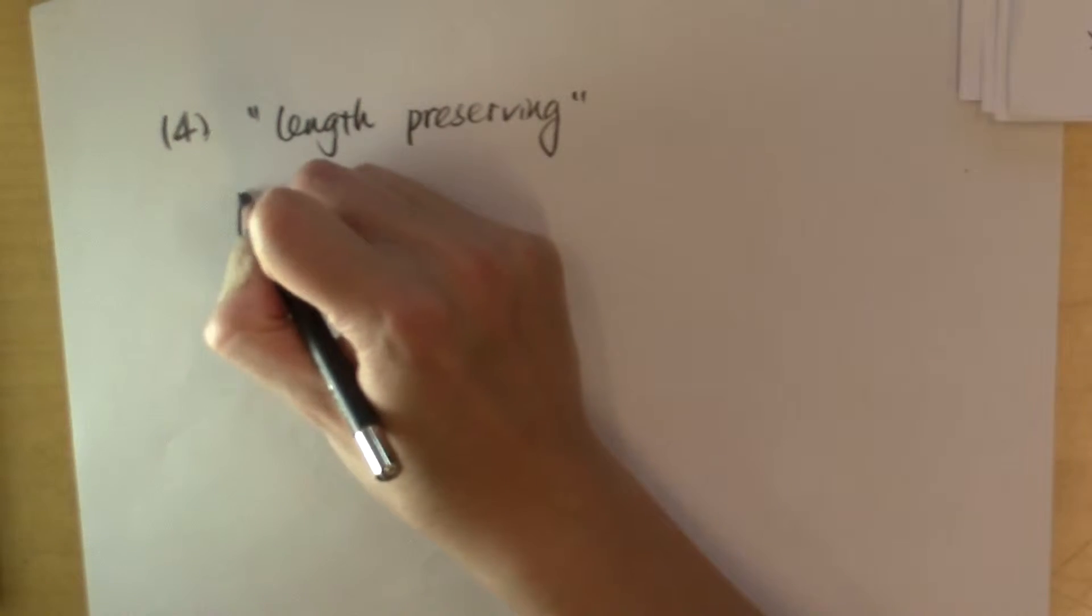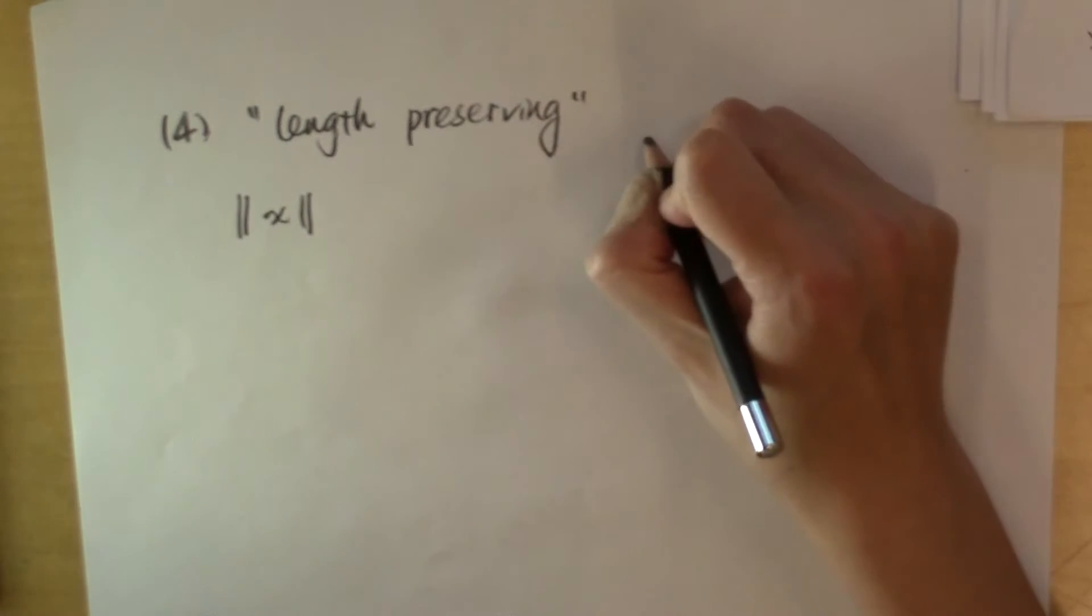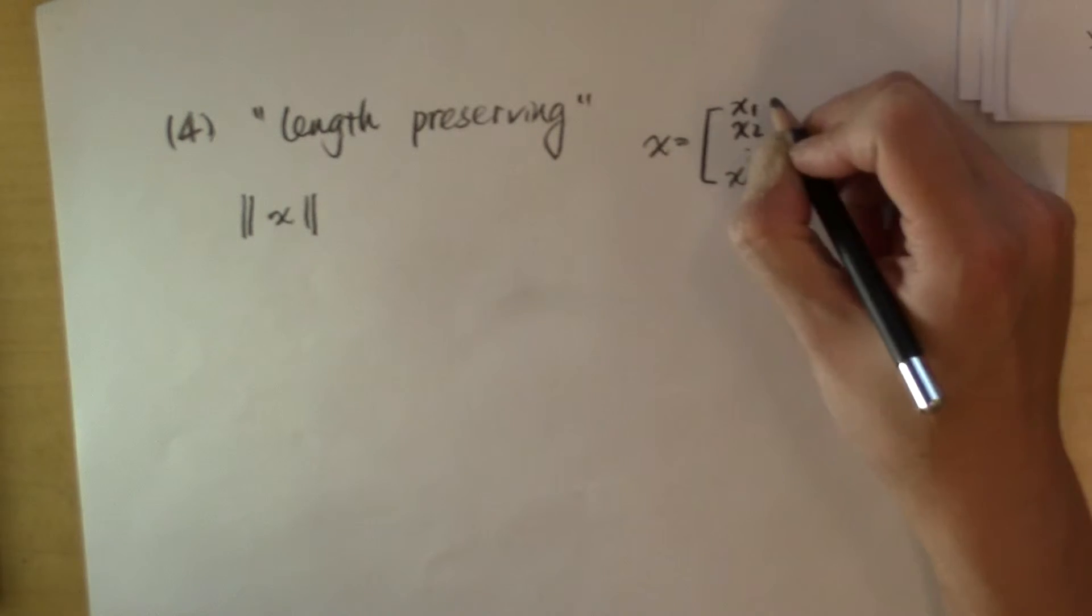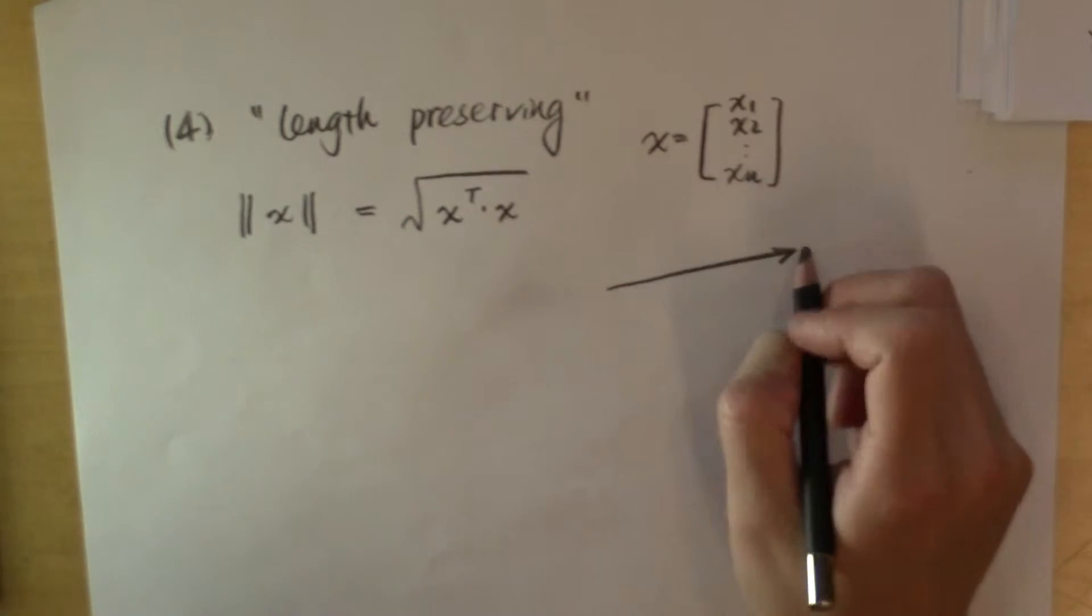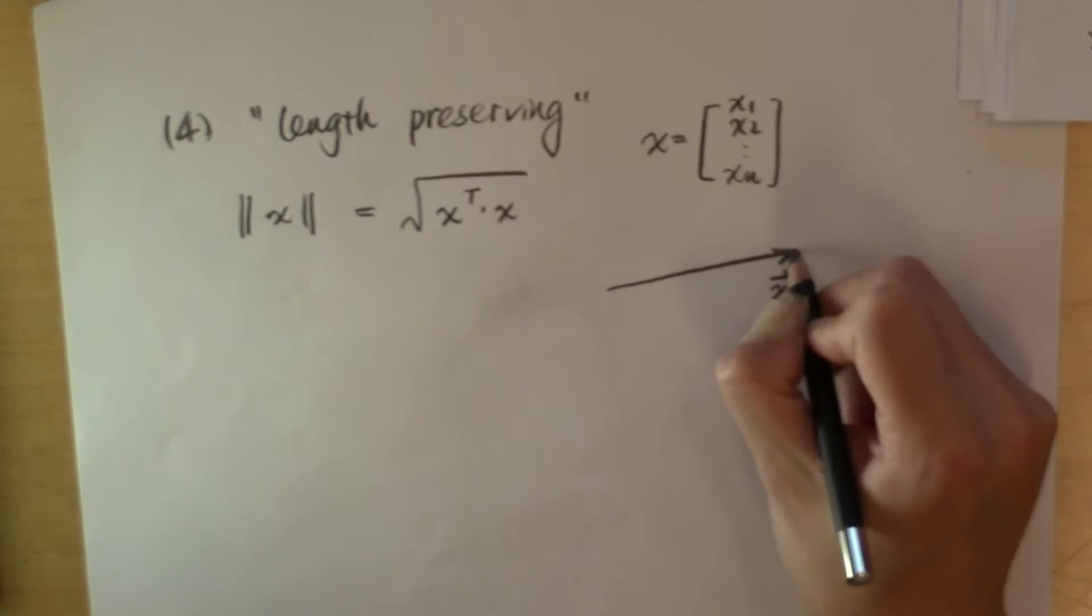Like we've talked before, the Euclidean norm of a vector x, x being x sub 1, x sub 2, etc., x sub n, this is the square root of the scalar product of x with itself. And this describes the length of the vector x in the Euclidean space.